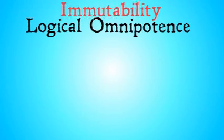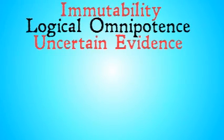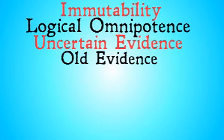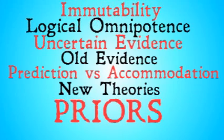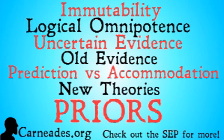That was the problem of logical omniscience. Next up, we're going to be taking a look at uncertain evidence and Jeffrey conditionalization, then old evidence, prediction versus accommodation, new theories, and the problem of the priors. Watch this video and more here at carneades.org. Check out the SCP for more information on all things Bayesian epistemology. And stay skeptical, everybody.